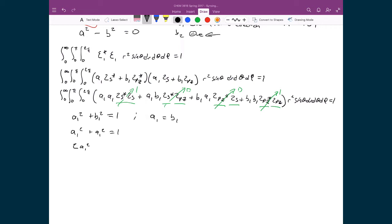Which means 2A1 squared is equal to 1, which means that A1 is equal to 1 over the square root of 2.